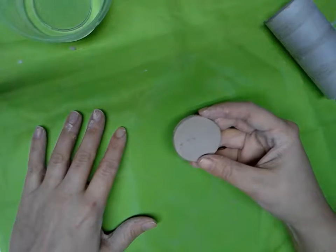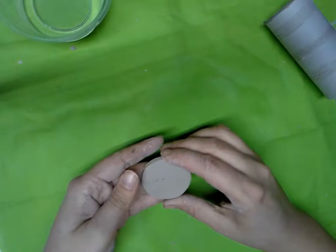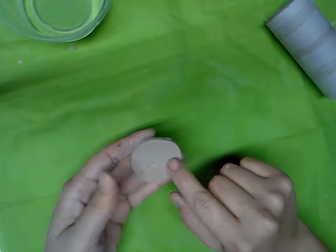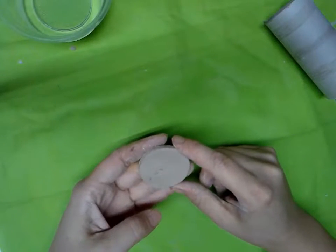So now that you have your magnet shape, you can do a few things. The first thing you're going to do is kind of smooth it out. You can see I've got those lines from where I've used my rolling pin.